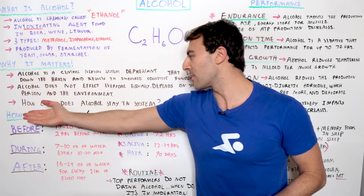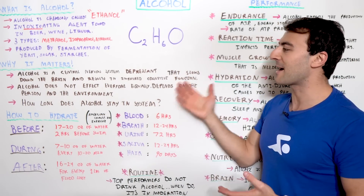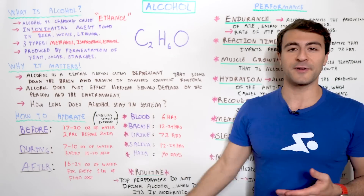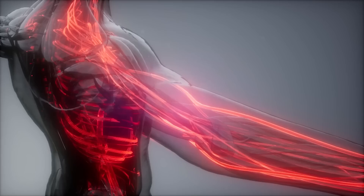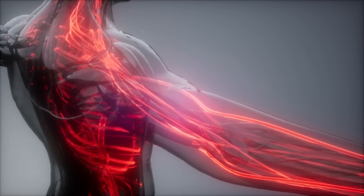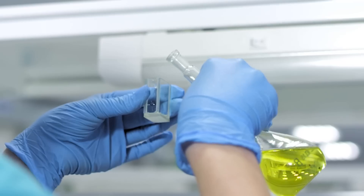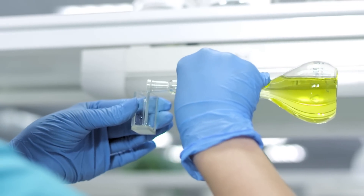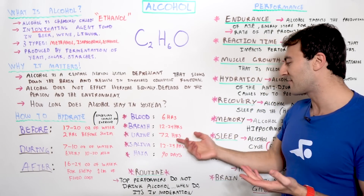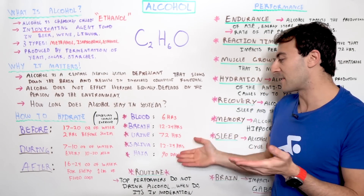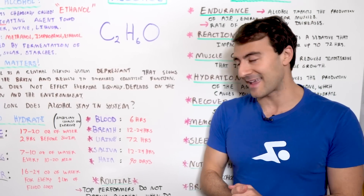A lot of people wonder: how long does alcohol actually stay in your system? That really contributes to how it impacts your body. In your blood, it can stay for up to six hours. Alcohol can stay in your breath for 12 to 24 hours. It can be traced in your urine for up to 72 hours, in your saliva for 12 to 24 hours, and alcohol can actually be traced in your hair for up to 90 days.